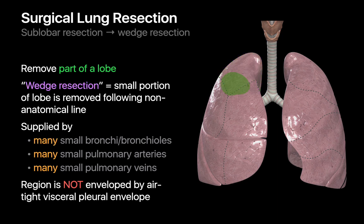Sublobar resections where a small portion of a lobe is removed along a non-anatomic boundary are called wedge resections. Wedge resections are also not like picking a tomato off a stem. The portion of lung removed may be supplied by many small airways, many small pulmonary arteries, many small pulmonary veins, and is not encased within a visceral pleural envelope independent from the rest of the lobe.